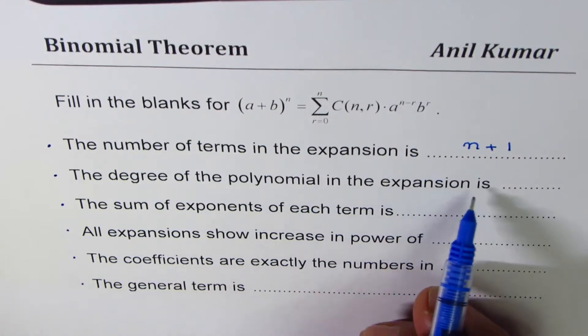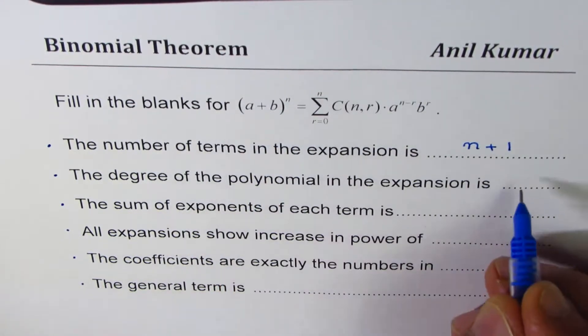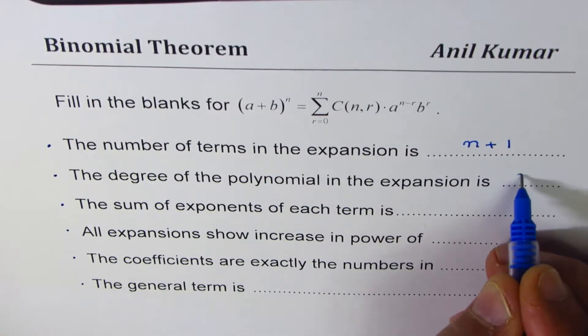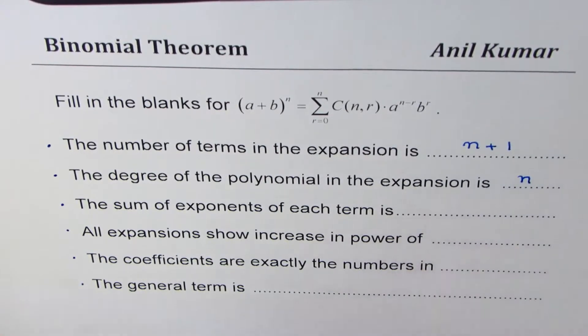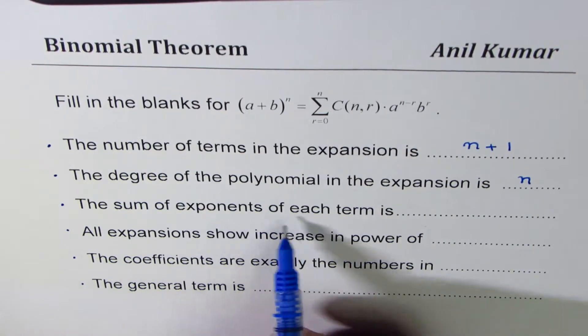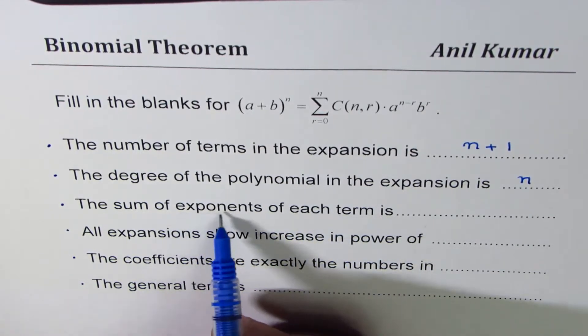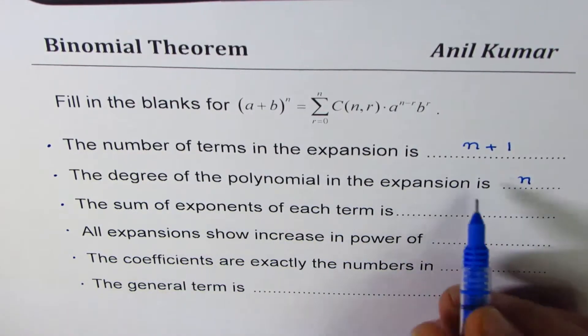The degree of the polynomial in the expansion is always n, so every term will have degree n. The sum of exponents of each term is n.